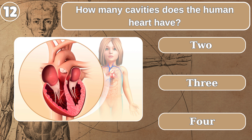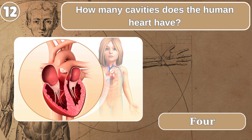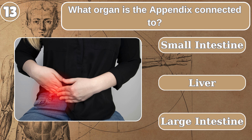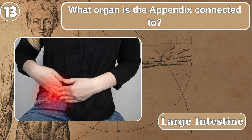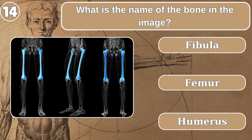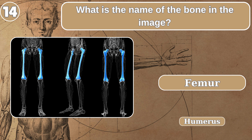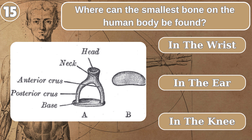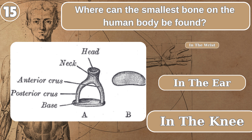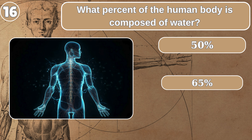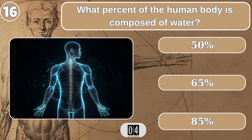How many cavities does the human heart have? What is the name of the bone in the image? Large intestine. Femur. Where can the smallest bone on the human body be found? In the ear. What percent of the human body is composed of water? 65%.